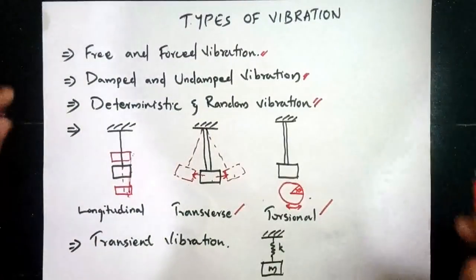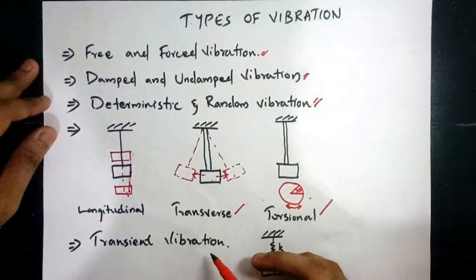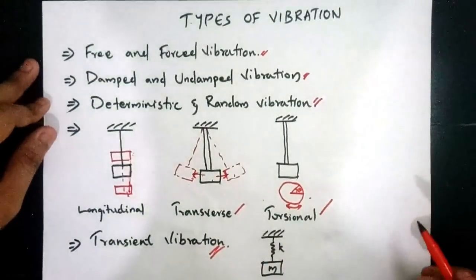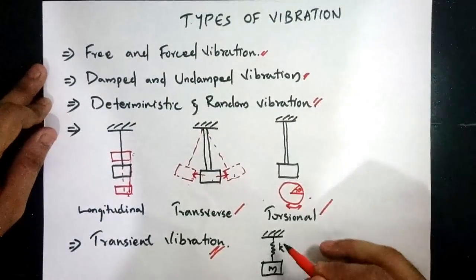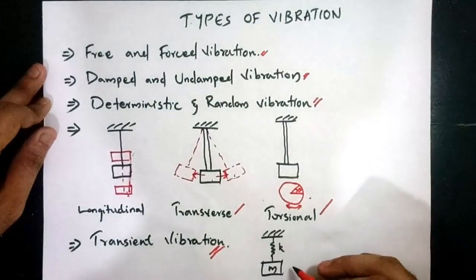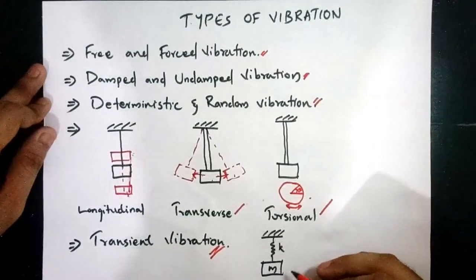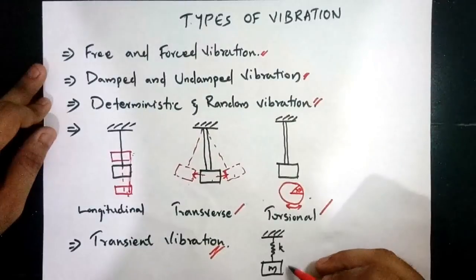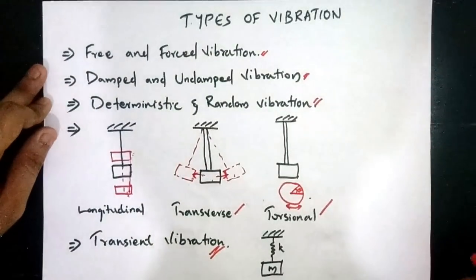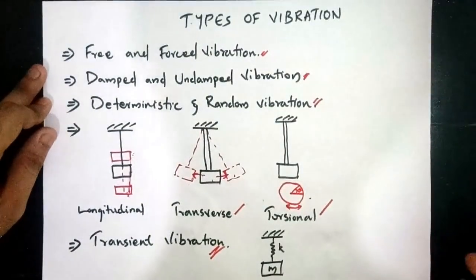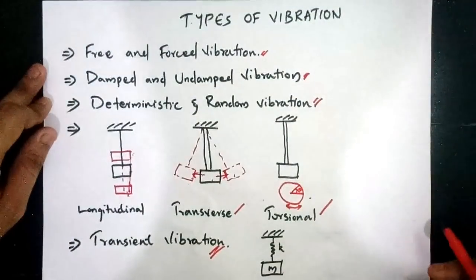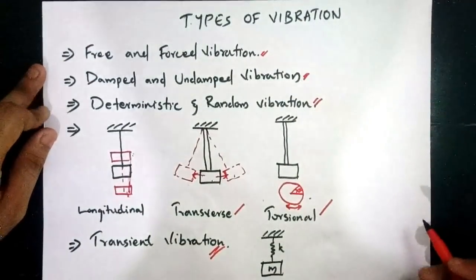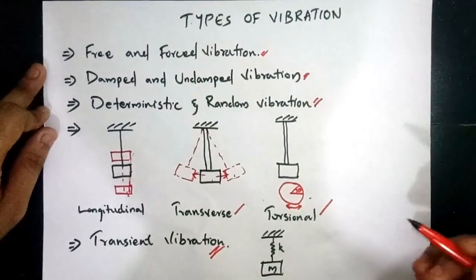The next term is transient vibration. If we consider a spring-mass system where the body freely vibrates, that vibration is known as free vibration. In the theoretical case, the amplitude of vibration remains constant, but in the actual case it decreases over time due to damping — this decaying vibration is known as transient vibration.